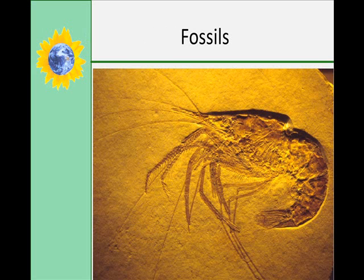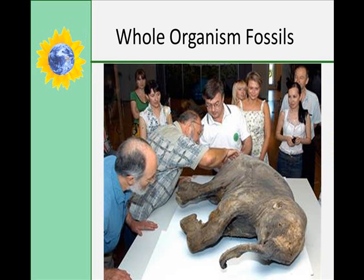Fossils are any naturally preserved remains or impressions of living things. They are generally found in sedimentary rock, because metamorphic and igneous rocks are formed under intense pressure at extremely high temperatures that would deform or destroy any fossils. Occasionally, whole organisms have been found preserved in the earth — insects encased in amber or tree sap, animals that have fallen into tar pits, and ice age mammoths frozen or encased in mud are all fossils that have been almost totally preserved. In fact, some mammoths were even used as a food source by people in Siberia.